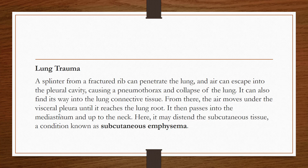Air can also find its way into the lung connective tissue. From the lung connective tissue, the air moves under the visceral pleura until it reaches the lung root. It then passes into the mediastinum, out of the pleural cavity, and up to the neck. Here it may distend the subcutaneous tissue, and this condition is called subcutaneous emphysema.